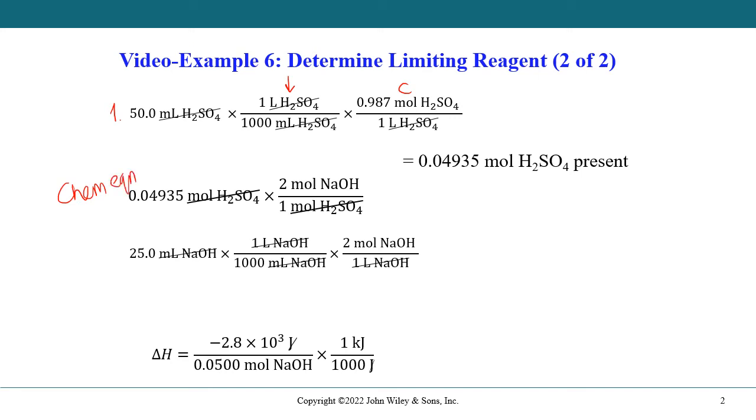Now, if we have this number of moles from the chemical equation, we would use the mole ratio of the sodium hydroxide to determine the number of moles of sodium hydroxide that would be required. So if we do that calculation, we end up with 0.0987 moles of sodium hydroxide. That is required, not what is actually present.